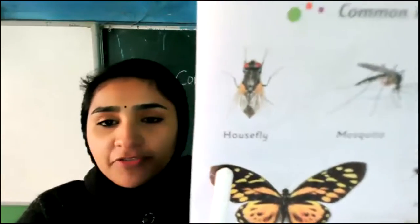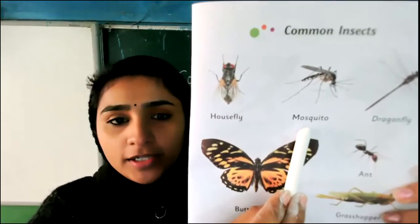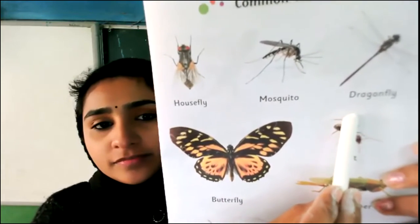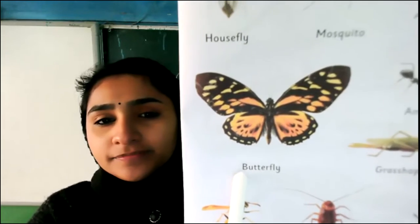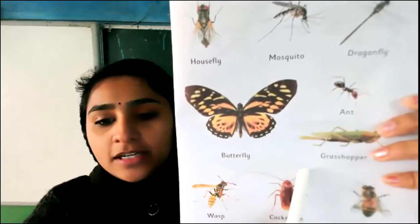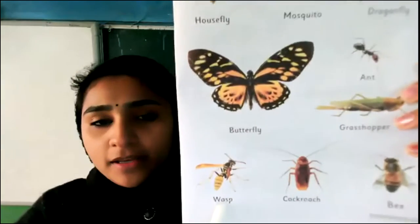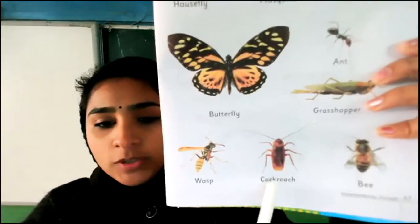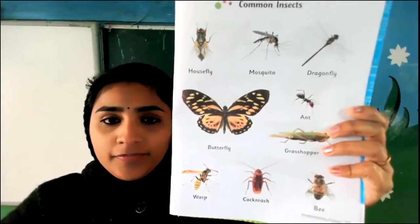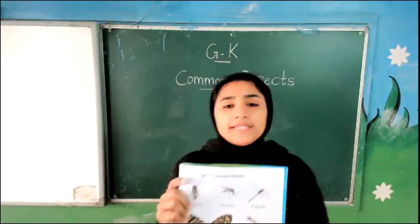Once again, read with me: housefly, mosquito, dragonfly, butterfly, grasshopper, wasp, cockroach, bee. Very good. So these are the names of some insects. Insects are having six legs.